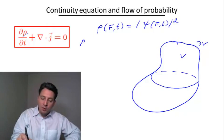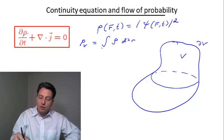And let me be interested in the probability of finding the particle, my quantum particle, inside this volume. So this probability, let me call it P_V, is going to be an integral of the probability density ρ, which appears here, over this volume.